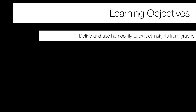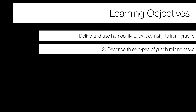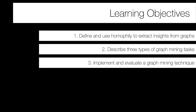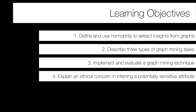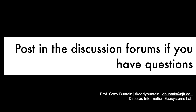We've now covered all four learning objectives: defining and using homophily to extract insights from graphs; describing the three graph mining types; implementing and evaluating graph mining techniques; and explaining ethical concerns around inferring potentially sensitive attributes. That's it for this module — the primary goal was to introduce you to graph mining problems, provide high-level and naive examples, and give you readings with more sophisticated, deeper examples.